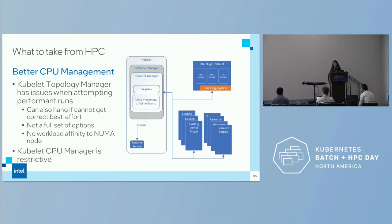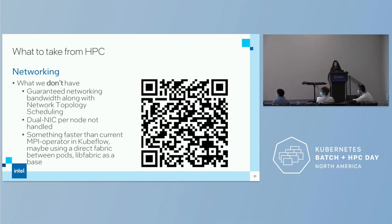I'd like to see the kubelet move to a model where these managers are pluggable instead of external. We do have some preliminary work on this. We also don't have guaranteed networking bandwidth with network topology. We still have the dual NIC per node issue — you either have to channel bond or do complicated things with Multus. We want something faster than the current MPI operator in Kubeflow, maybe using a direct fabric between pods, perhaps using libfabric, which is an HPC tool, as the base for fast fabric.